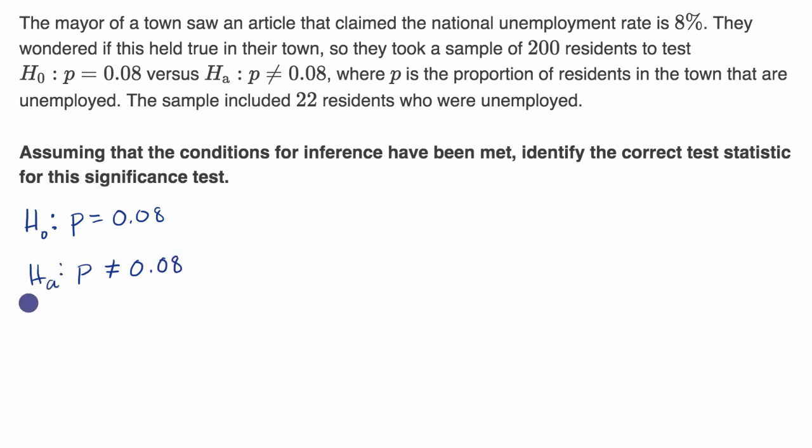So what we would do is set some type of a significance level. Let's say the mayor sets a significance level of 0.05. And then what we want to do is conduct the experiment. So this is the entire population of the town. They take a sample of 200 people. So this is our sample. N is equal to 200.